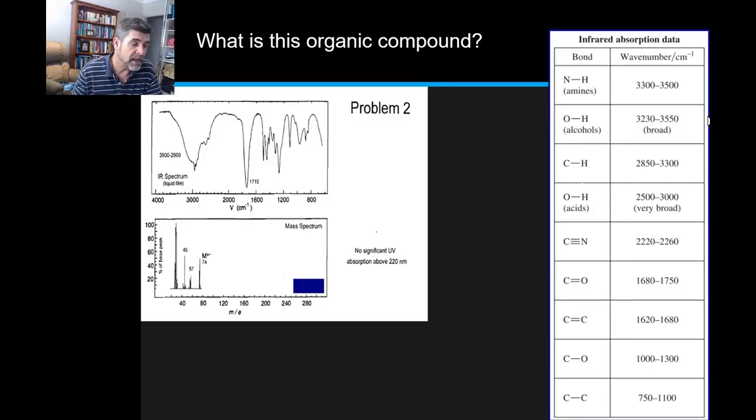So the first thing that I want to look at is the mass spectra. The mass spectra is telling me that the maximum value here, the molar mass, is 74. So that's a good starting point. That gives me a little bit of information that might be useful to me at some point.